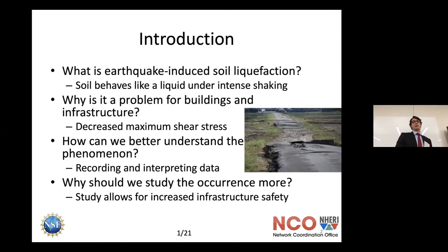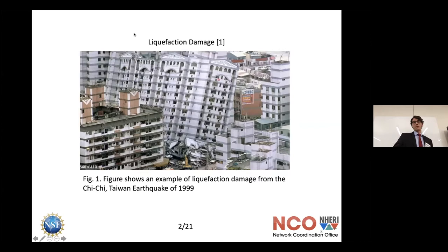For example, if we know that liquefaction is going to occur at half a G of acceleration in a certain region, we'll need to build with a safety factor of two so that our building will be safe if a stronger earthquake happens. Here's an example of liquefaction damage from the Chi-Chi Taiwan earthquake in 1999 — as you can see, that building is pretty destroyed.